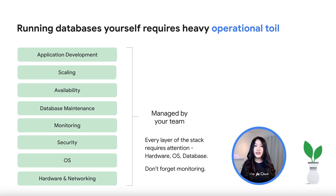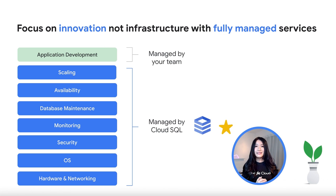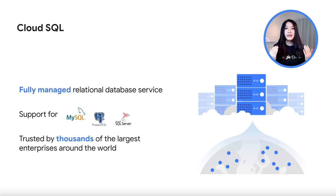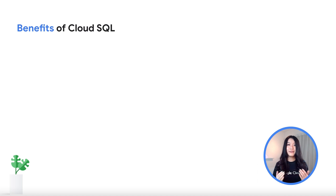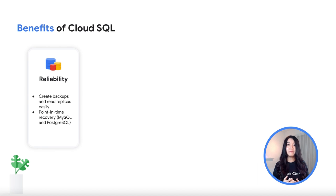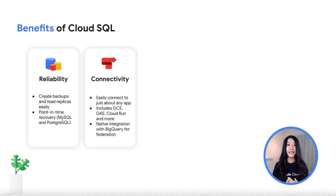Building, running and maintaining infrastructure means less time creating value for your app. Run the same relational databases that you know without the hassle of self-management — this frees up time for you to focus on building great applications. Cloud SQL is a fully managed database service where Google takes care of the administrative tasks required to run a database, making it easy and simple to operate. Cloud SQL has full compatibility with MySQL, PostgreSQL and SQL Server, and you can easily create read replicas and backups with automatic failover, ensuring your database is always available. Cloud SQL also offers easy integration with just about any application, from Google Kubernetes Engine to Compute Engine and many more.